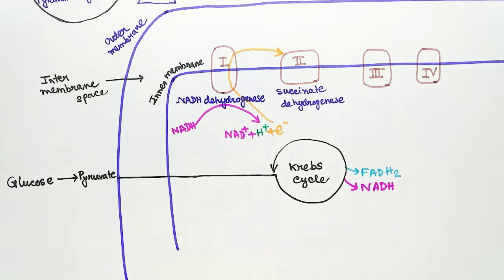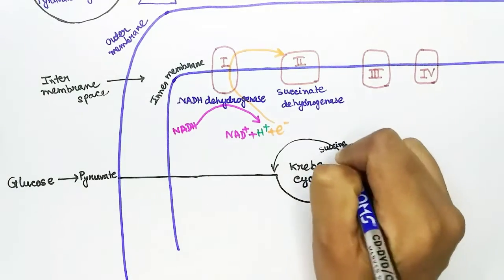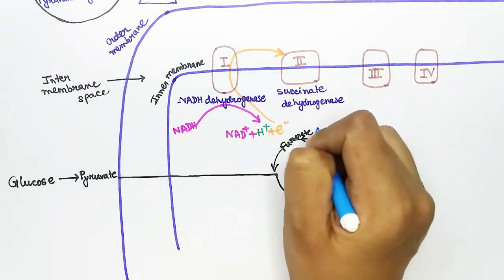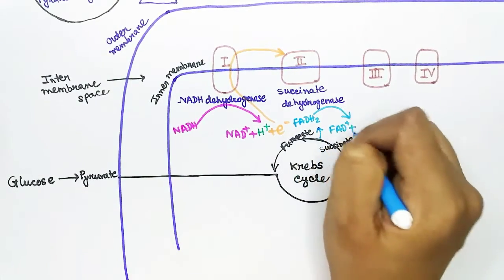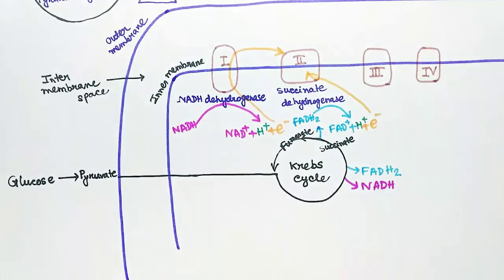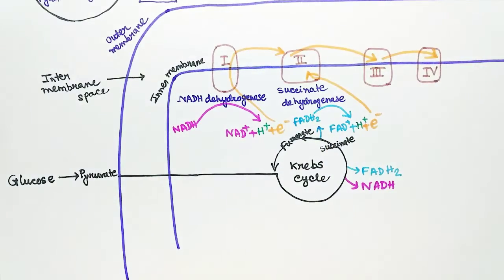Succinate dehydrogenase is also an enzyme of the Krebs cycle. In the Krebs cycle, succinate dehydrogenase is used to convert succinate to fumarate, and the electrons of FADH2 in this conversion are collected by the succinate dehydrogenase complex. The electrons received from Complex 1 and the electrons received from FADH2 are all transferred to the next complex.